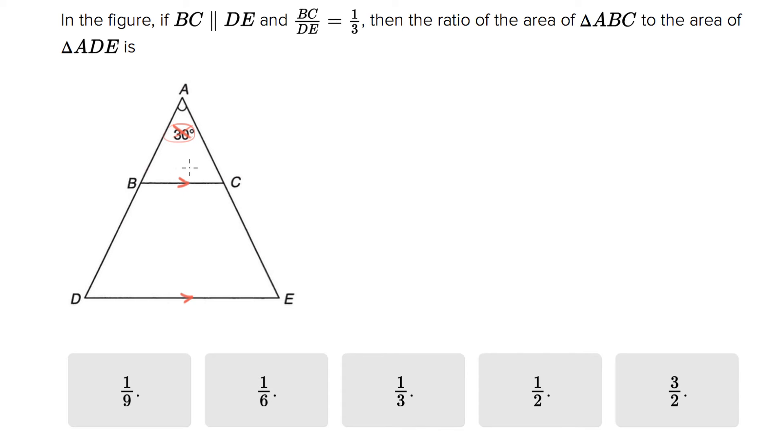All of their angles are exactly the same, and you can go through and check that because we have corresponding angles here and here. They share an angle up top, and then we've got corresponding angles here and here. So they have all the same angles, they're similar triangles.